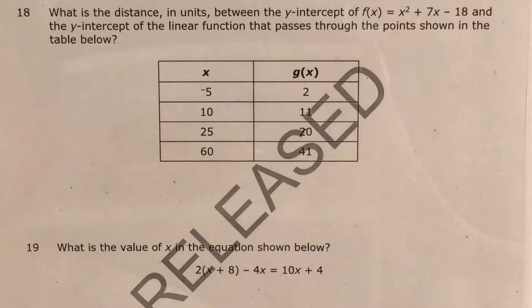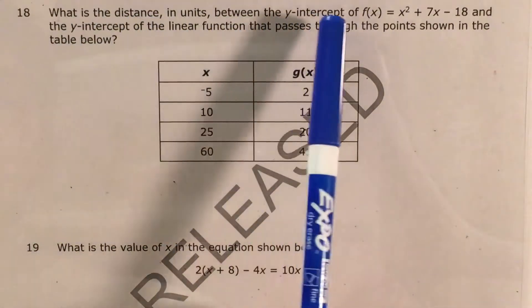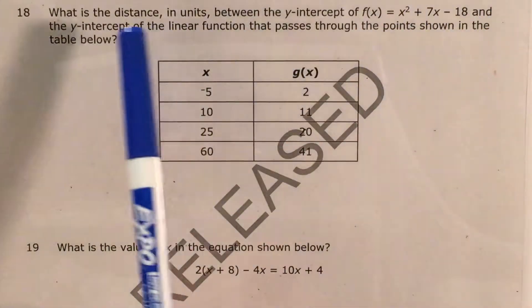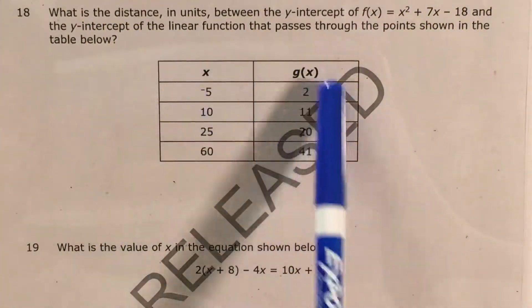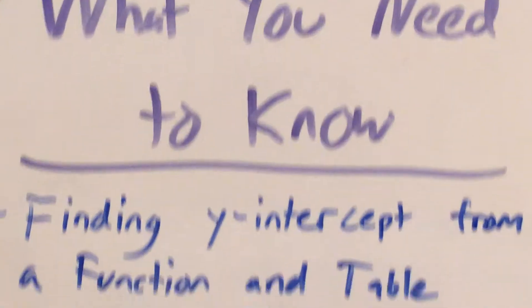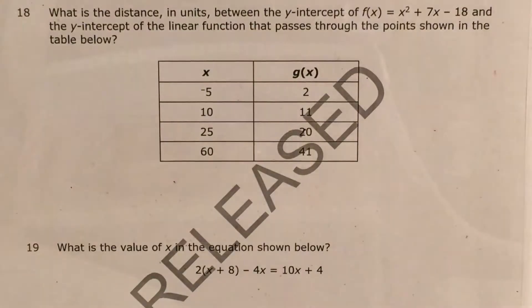What's up math scholars and math haters? This is Mr. W. Today we're going to tackle question 18 in the Math 1 questions that North Carolina released this past school year. The question is asking us to find the distance between the y-intercept of this function and the y-intercept of the function that we just have this table of values for, x and g of x. This is going to test you on finding your y-intercept from a function and from a table.